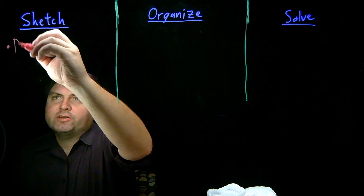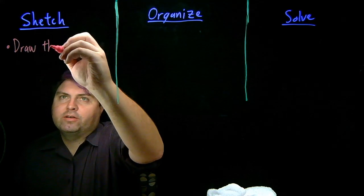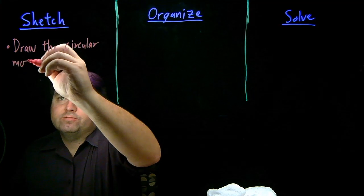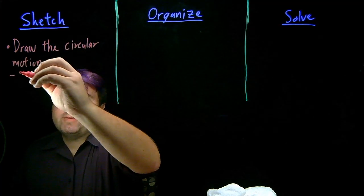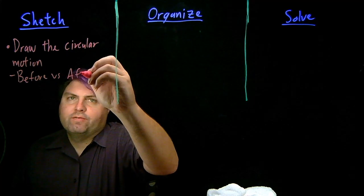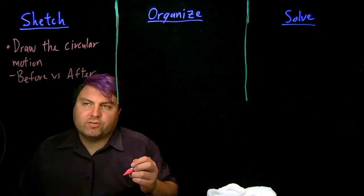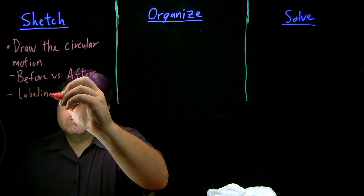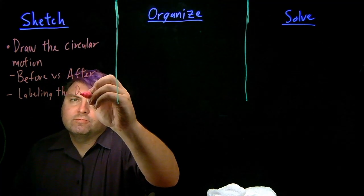So in our sketch step, we want to start by drawing the circular motion. So this might include having a before versus after if we have some sort of change and labeling the drawing.